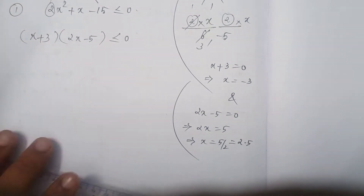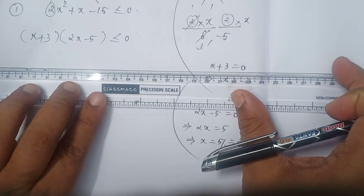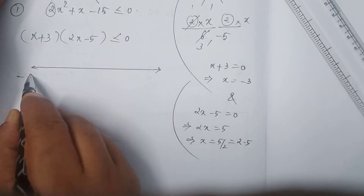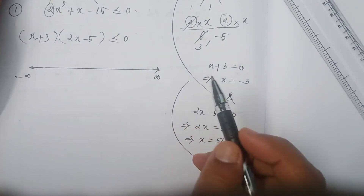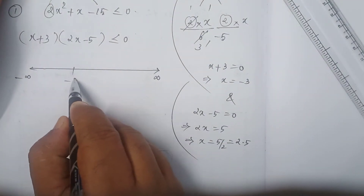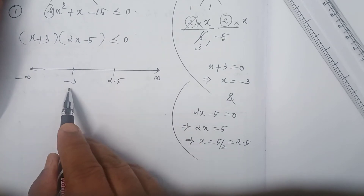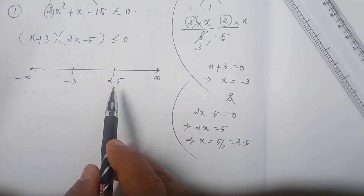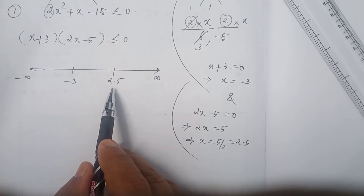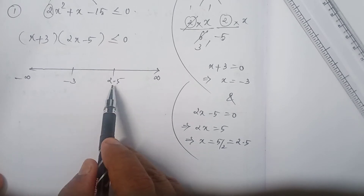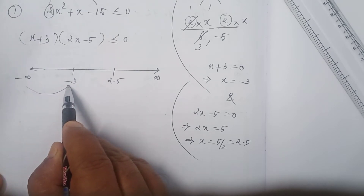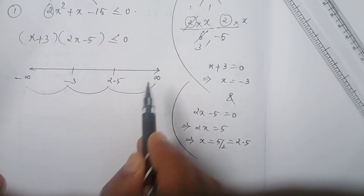Now we draw a real line starting from minus infinity and ending at plus infinity. We have two numbers: minus 3 and 2.5. Minus 3 comes first and 2.5 is the greater number. These two numbers, minus 3 and 2.5, divide the real line into three intervals: first interval, second interval, and third interval.